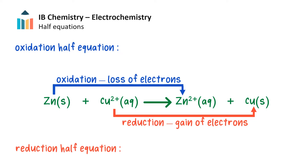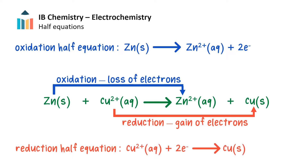We can break up a redox reaction into two half reactions, or half equations — one for oxidation and one for reduction. We can write the oxidation half reaction like this: on the right-hand side the electrons have been separated or removed from zinc, since it was oxidized. We can write the reduction half reaction like this: on the left-hand side, electrons combine with the copper(2+) ion, since it is reduced.